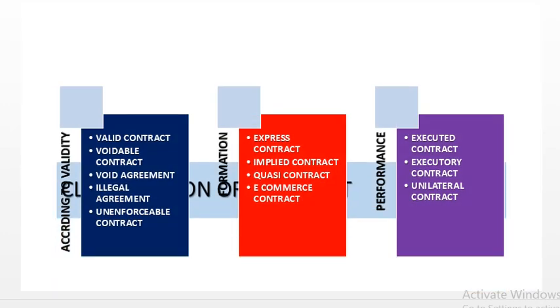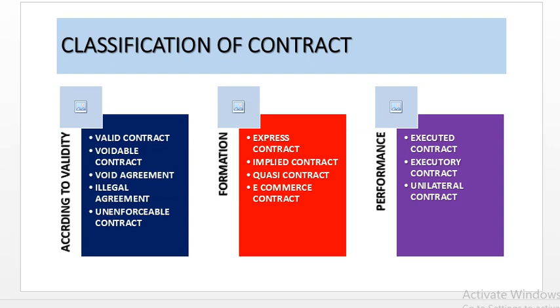First of all, we will see how the contract could be classified. The contract can be classified according to validity, according to formation, and according to performance.